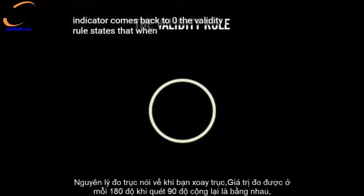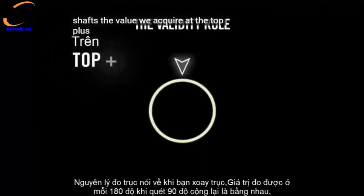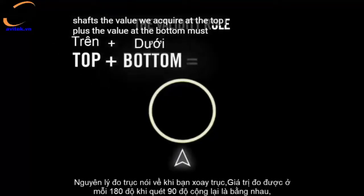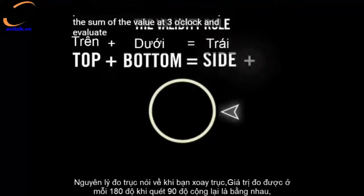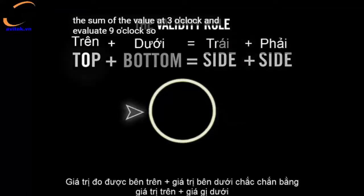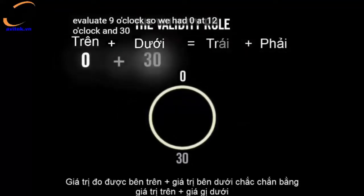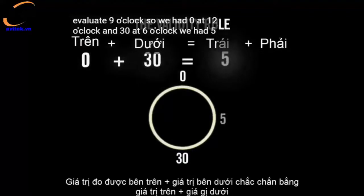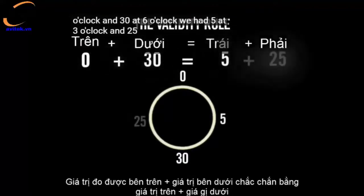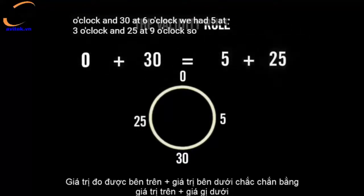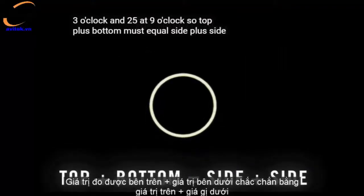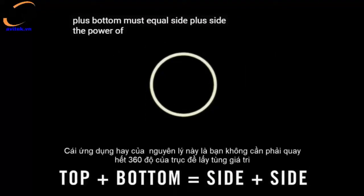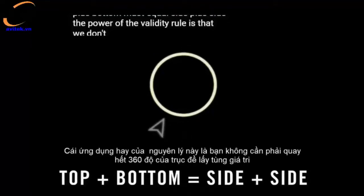The validity rule states that when we rotate the shafts, the value at the top plus the value at the bottom must equal the sum of the value at three o'clock and the value at nine o'clock. We had zero at twelve, 30 at six, 5 at three, and 25 at nine — so top plus bottom must equal side plus side.